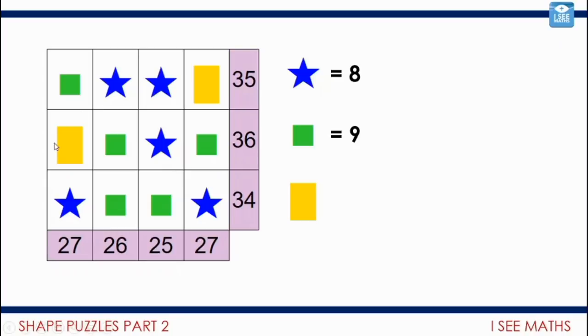Now, I can look at any line really with this rectangle in. A star is eight plus my two squares, which is 18. Eight add 18 gets me to 26. So the rectangle, well, it must be worth 10.